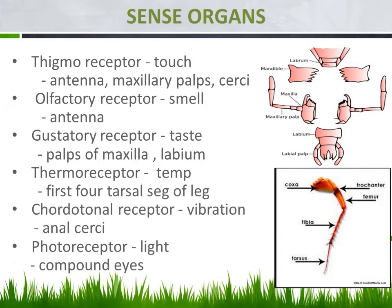The third receptor is the gustatory receptor, which is responsible for receiving the sense of taste. This is present in the mouth — specifically the palps of the maxilla and the labium, which is the last single segment. Both of these are responsible for receiving the sense of taste.